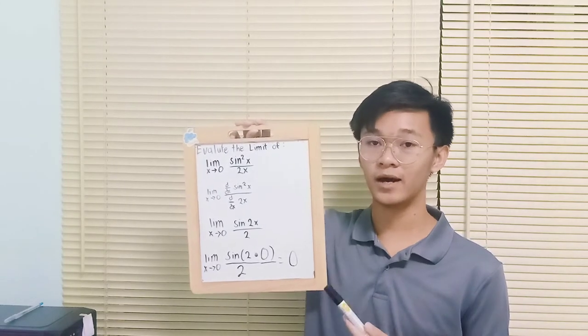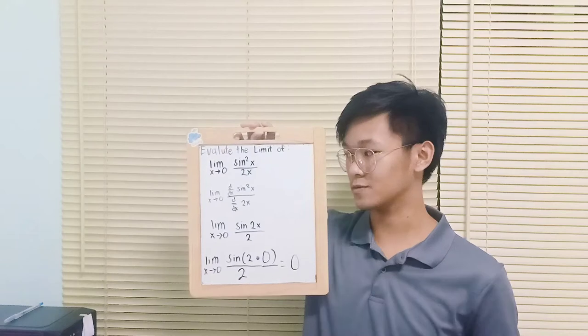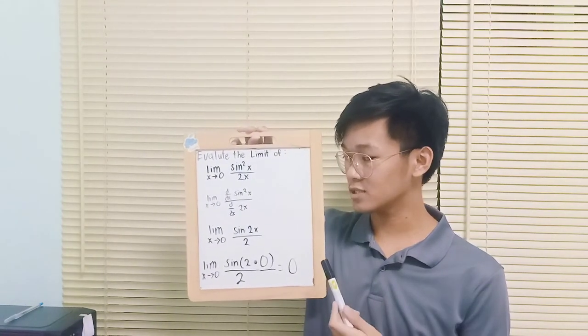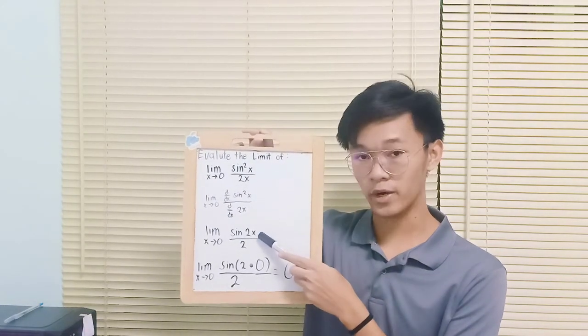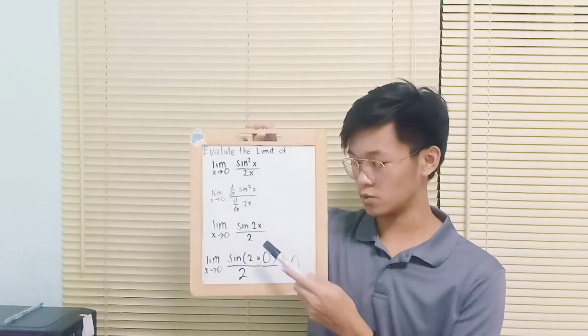According to the rule, we need to find the derivative of the numerator and the denominator. The derivative of the numerator, which is sin squared x, is sin 2x, and the derivative of the denominator, which is 2x, is 2.